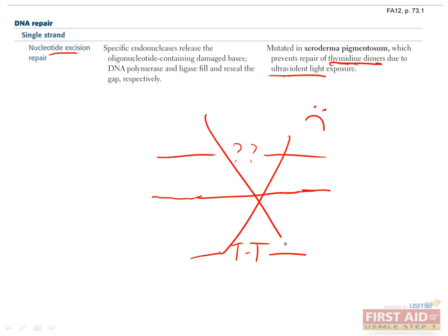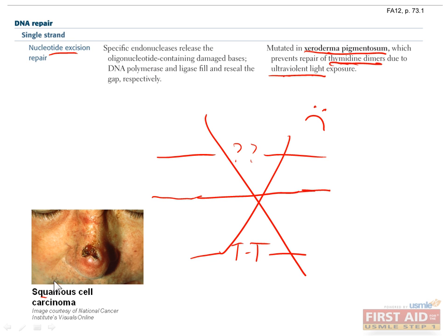If the enzymes involved in this repair pathway are mutant or deficient, this causes a disease called xeroderma pigmentosum. Cells in these patients can't repair thymidine dimers, so they're particularly sensitive to sunlight and have dry skin and a high prevalence of melanoma and other cancers. This picture shows a squamous cell carcinoma in one such patient.